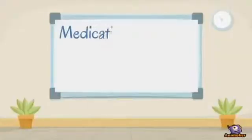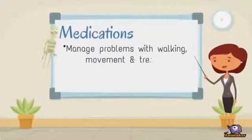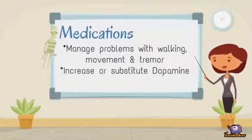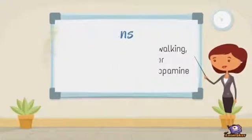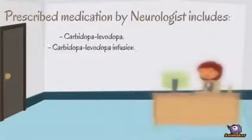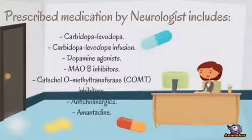Medications may help you manage problems with walking, movement, and tremor. These medications increase or substitute for dopamine. Medications your neurologist may prescribe include carbidopa levodopa, dopamine agonists, MAOB inhibitors, catechol-O-methyltransferase inhibitors, anticholinergics, and amantadine.